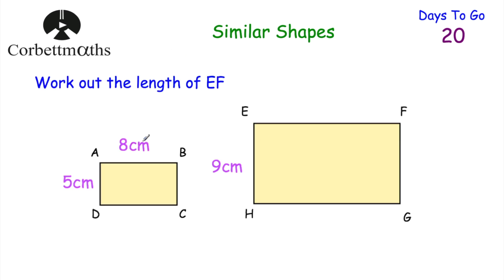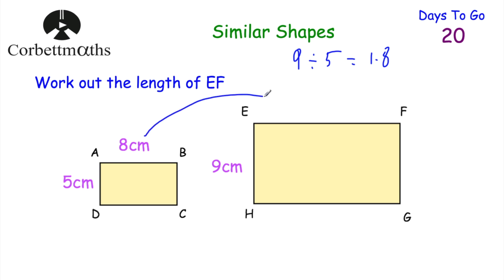This is a calculator question. Can you work out the length of EF for these two similar rectangles? Press pause and do that now. Take the width of the larger rectangle (9) and divide by the width of the smaller one (5): 9 divided by 5 equals 1.8, so the scale factor of enlargement is 1.8. Multiply the length of the smaller rectangle — 8 centimetres — by 1.8 to get 14.4 centimetres. So the length of EF is 14.4 centimetres.